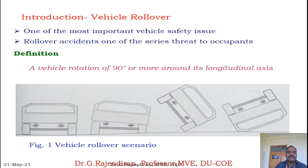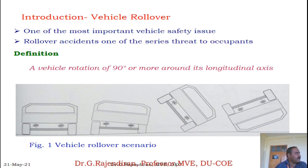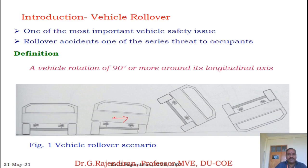There are a number of factors which are influencing rollover. As far as the definition is concerned, vehicle rollover is the rotation of 90 degrees or more around its longitudinal axis. When the vehicle is moving in a straight line, if there is a possibility of cornering, side force, wind force, banked road, or off-road conditions, there is a possibility of load distribution difference between the two wheels, leading to lateral acceleration and rollover.